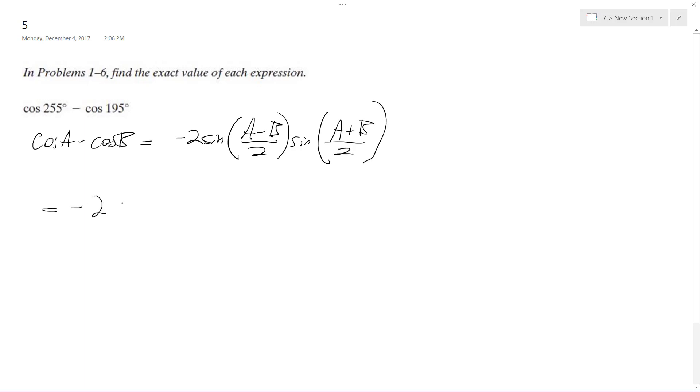Filling this all in, sine of A minus B, so 255 minus 195 over 2 times the sine of 255 plus 195 over 2.